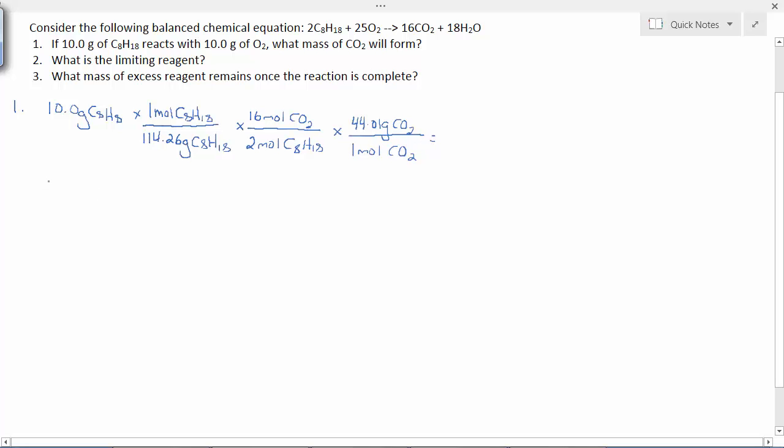This is a mass-mass problem. That setup will give me grams carbon dioxide. Now I'm going to set up the second calculation: 10 grams of O2, convert to moles. Then I'm going to apply the mole ratio of CO2 to O2. In this case, it's 16 moles of carbon dioxide for every 25 moles of oxygen. The final step is the same: 44.01 grams of carbon dioxide per one mole.